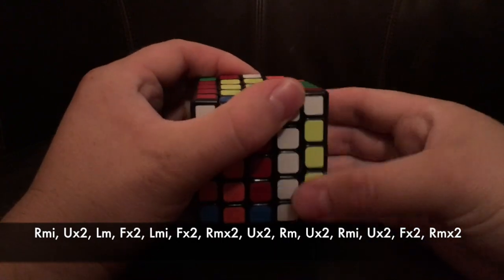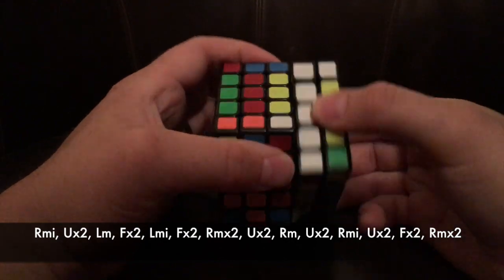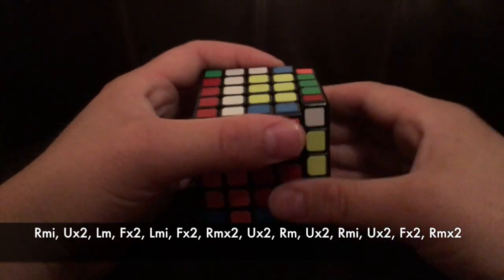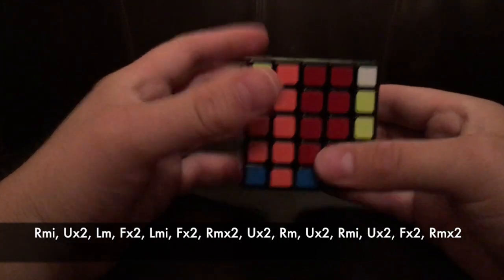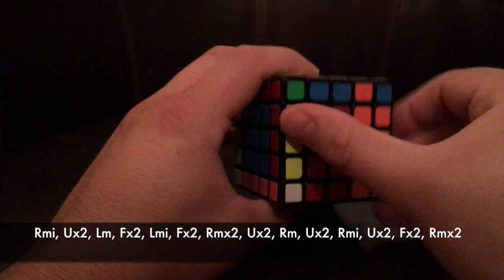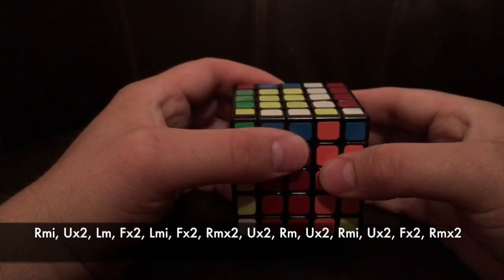So right middle twice, upper twice, right middle, upper twice, right middle, upper twice, right middle inverse, upper twice, front twice, and right middle times two.